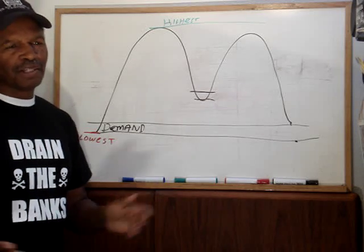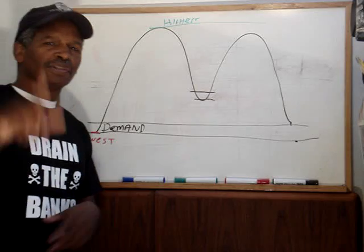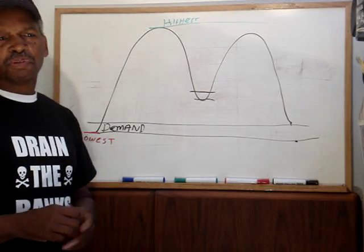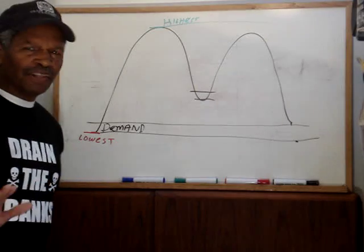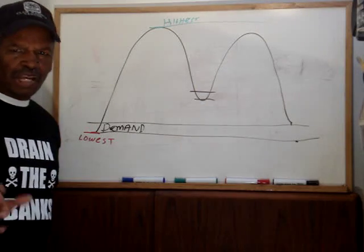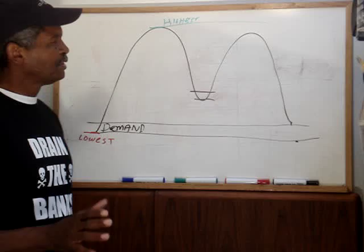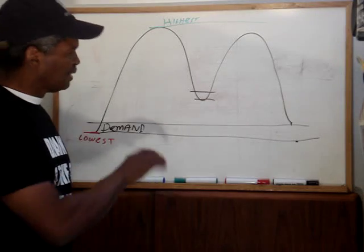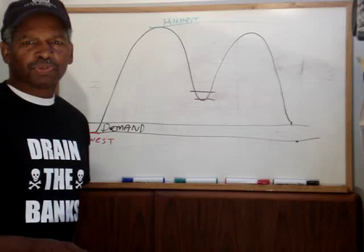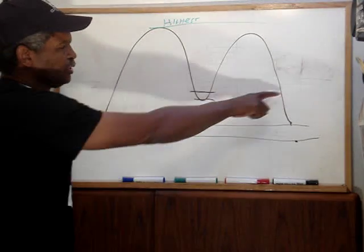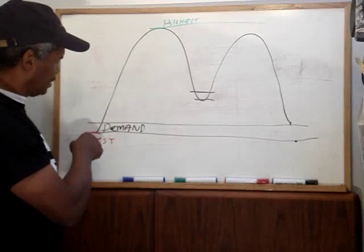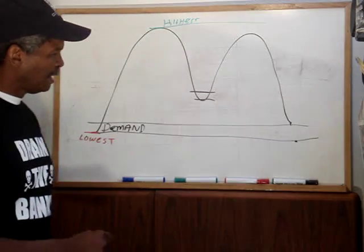And a lot of times you guys know you wind up getting stopped out of trades only to see price eventually reverse and you would have made money. So to eliminate all that nonsense, I think maybe in one of my previous videos I talked about that one indicator that automatically calculates your position size based on where price is relative to the lowest low and highest high.